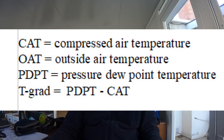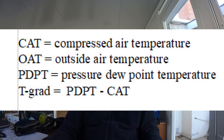First we need to start off with some definitions. The CAT is the compressed air temperature. The OAT is the outside air temperature or your shop temperature. The PDPT is the pressure dew point temperature. And the T temperature gradient is equal to the PDPT minus the CAT.